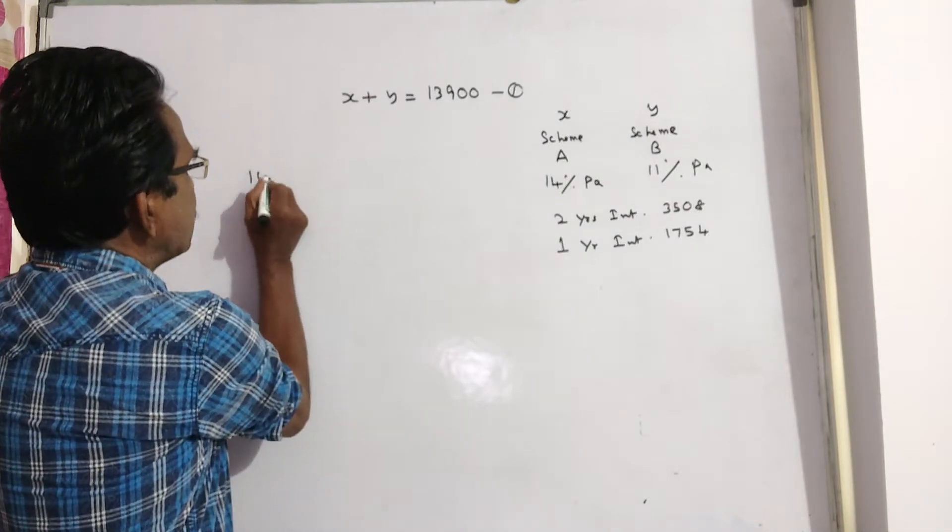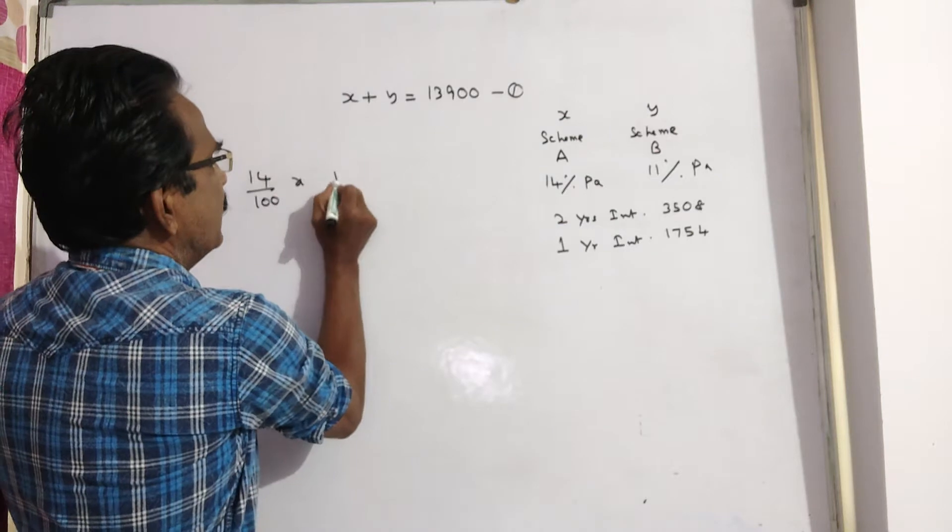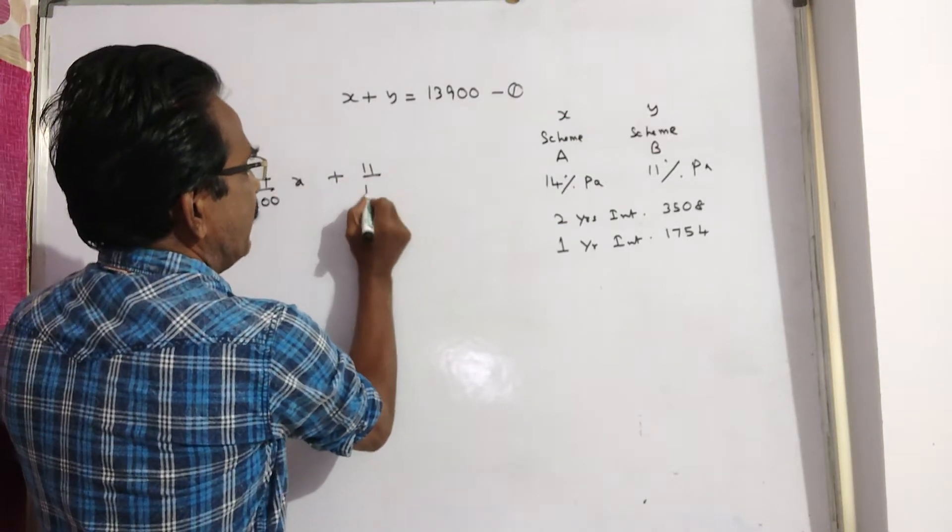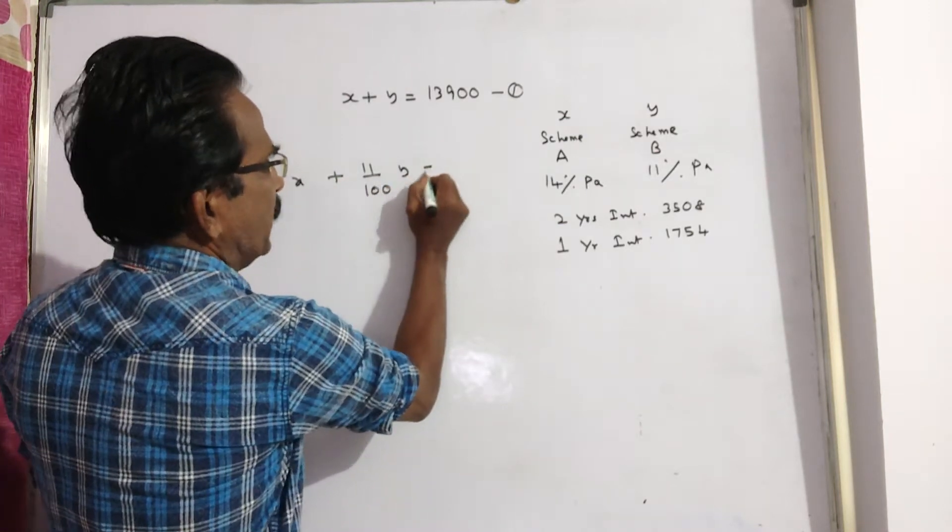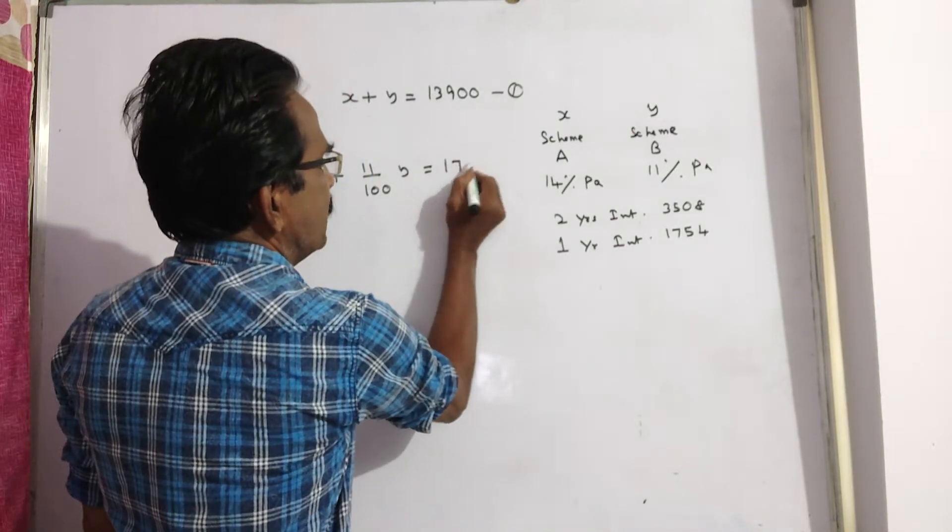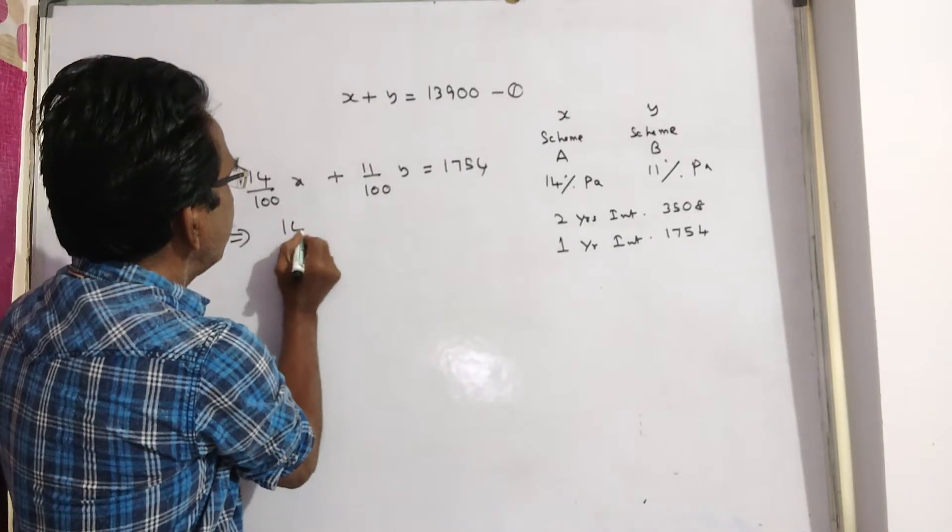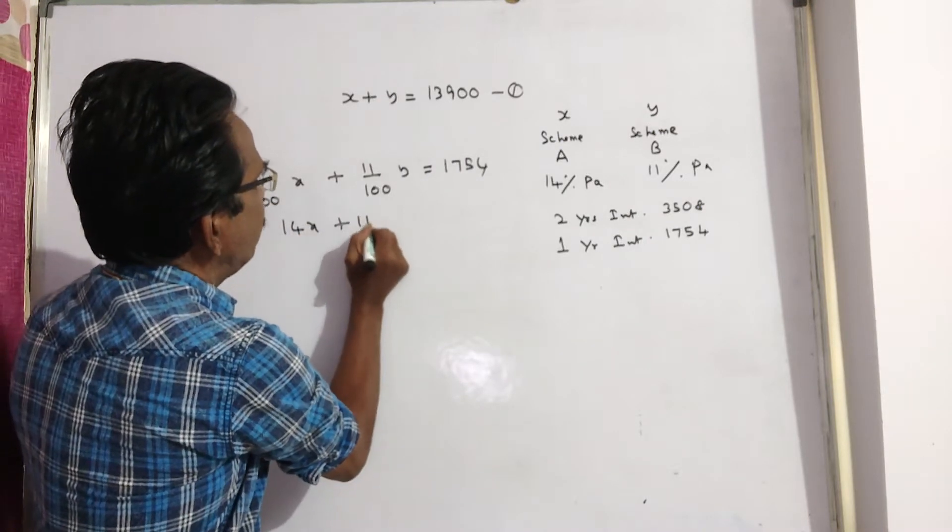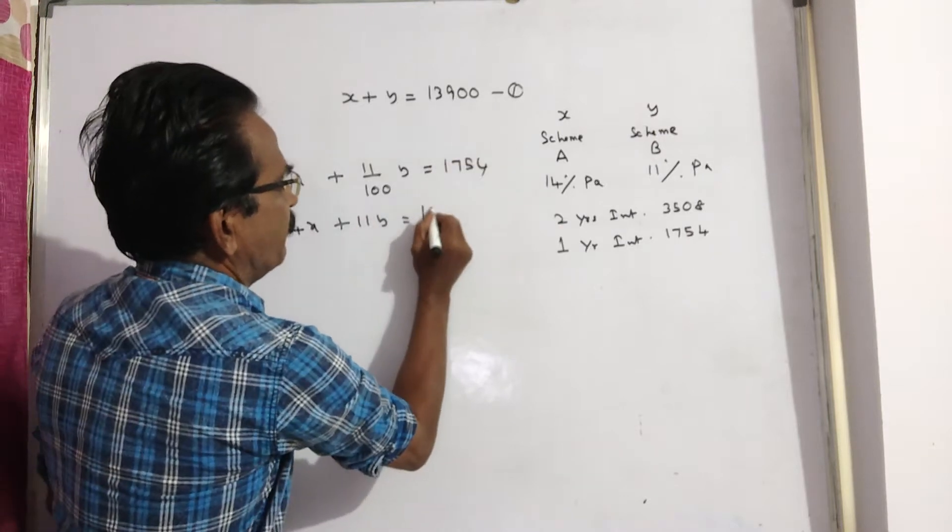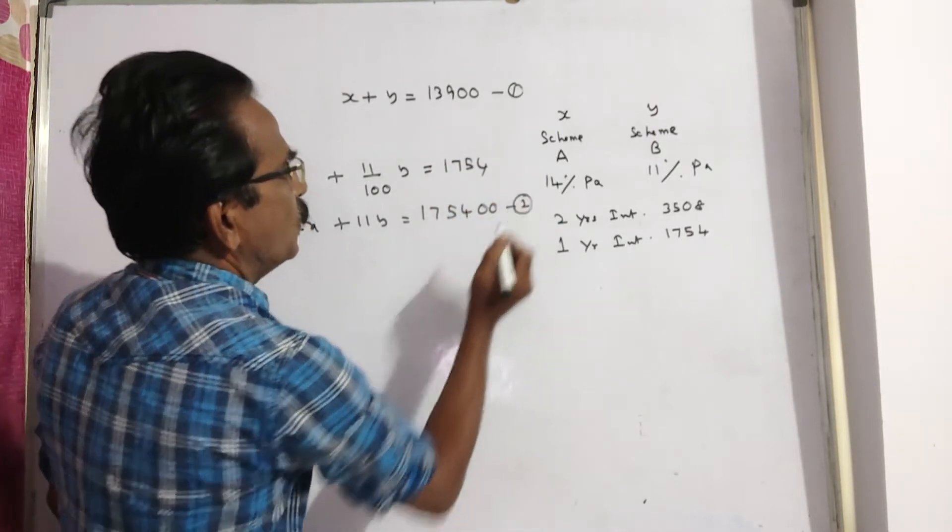So 14% of X plus 11% of the amount invested in scheme B is equal to interest 1,754. It implies 14X plus 11Y is equal to 100 into 1,754, that is 175,400. Say this is equation 2.